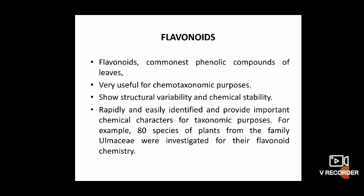Several other studies have used flavonoid chemistry for taxonomic purposes in families such as Araliaceae, Cornaceae, Labiatae, Leguminosae, Orchidaceae, Rosaceae, Lemnaceae, and others. Although useful in assessing relationships among closely related species, flavonoids are occasionally useful in assessing phylogenetic relationships at higher levels.